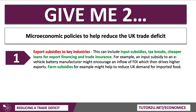For example, an input subsidy to an e-vehicle battery manufacturer might encourage an inflow of foreign direct investment, which then, over time, drives higher exports. So maybe some subsidies to encourage investment into the UK at an industry level — a micro level — which grows the capacity of that sector and then drives higher exports. Or, for example, a farm subsidy might encourage domestic farm production and help to reduce UK demand for imported food. You might be able to envisage a subsidy diagram affecting costs and revenues, or a subsidy diagram affecting supply and demand.